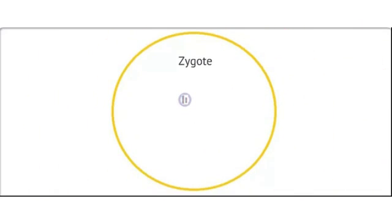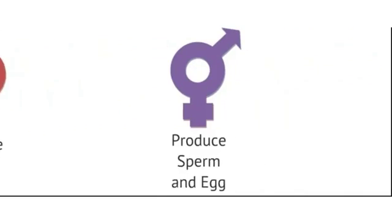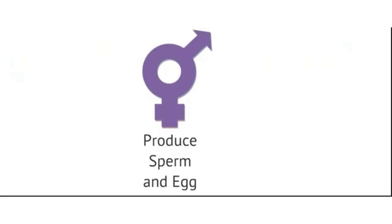That zygote will divide many times to form a multicellular diploid offspring, which will be genetically distinct from the parents, and from other siblings formed by the fusion of a different set of gametes. The source of these gametes are normally from a male and a female of the species. But there are certain types of organisms which are hermaphrodites, and able to produce both male and female gametes.